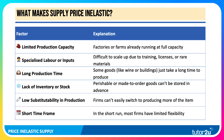Firms may critically lack inventory or stock. Typically, perishable or made-to-order goods, like furniture, can't necessarily be stored in advance. So there are quite long lead times before consumers can receive the things they've bought.